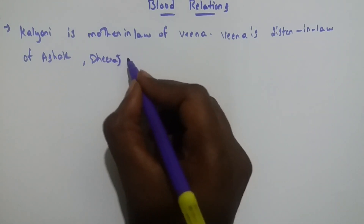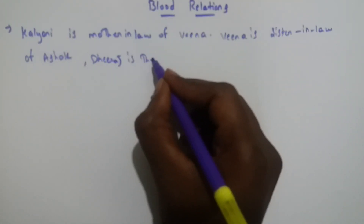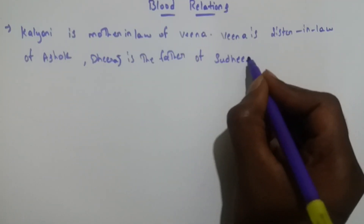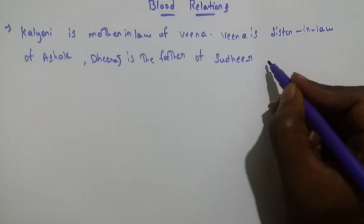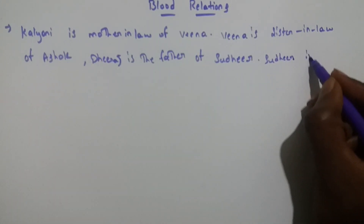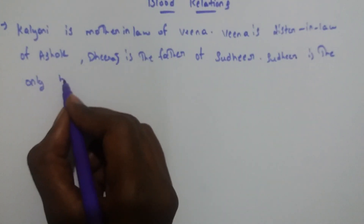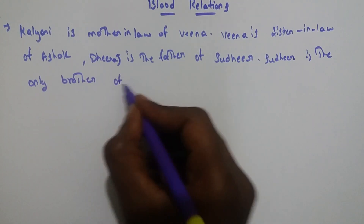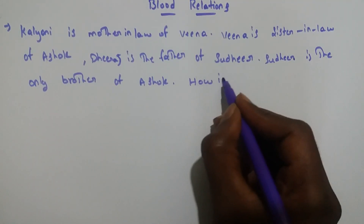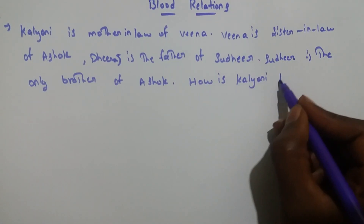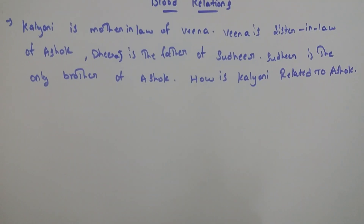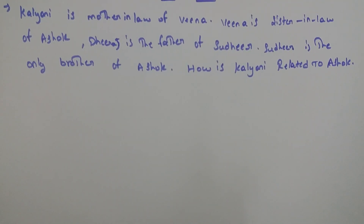Dheeraj is the father of Sudhir. Sudhir is the only brother of Ashok. How is Kalyani related to Ashok? Let's see the question.